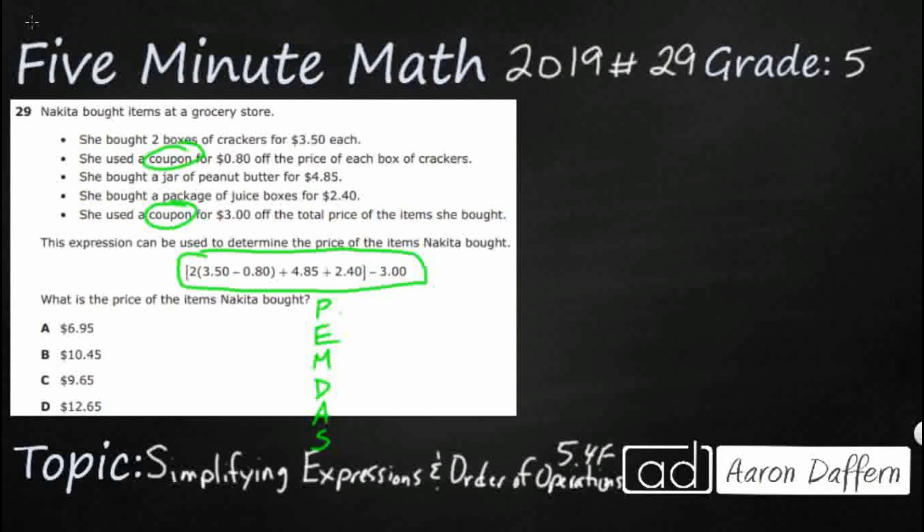So we always take care of our parentheses first and we have two sets of parentheses, an inner set of parentheses right here, and then we've got these outer brackets. Those also serve as parentheses. We just make them look a little bit different when we have parentheses inside parentheses so we can distinguish between the two. So the outer ones, which we deal with second, are the brackets. The inner ones are just the pure parentheses.